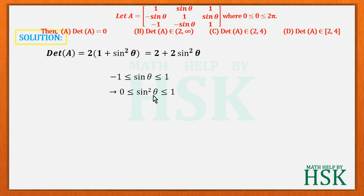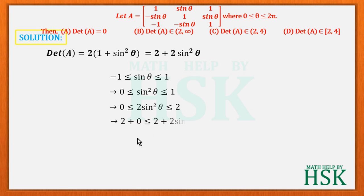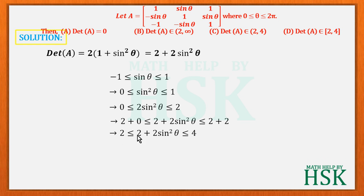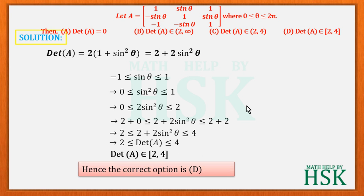Multiplying the inequality by 2: 0 ≤ 2sin²θ ≤ 2. Adding 2 to each term: 2 ≤ 2 + 2sin²θ ≤ 4. Since 2 + 2sin²θ equals det(A), we conclude that det(A) lies in the closed interval [2, 4]. Therefore, the correct option is that det(A) belongs to the closed interval [2, 4].